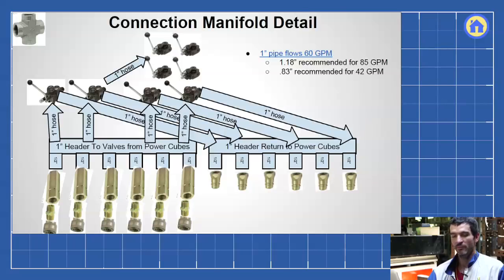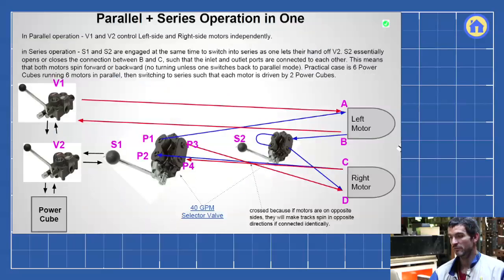We have a check valve feeding from each power cube because you don't want back feed pressure if a power cube goes off, because you can go between one and six power cubes, you can do that any amount of them that you like.